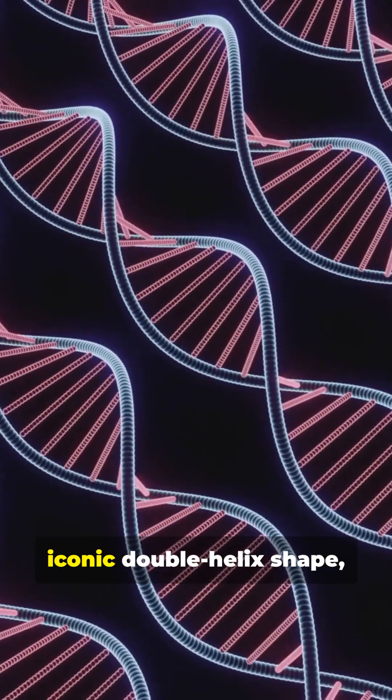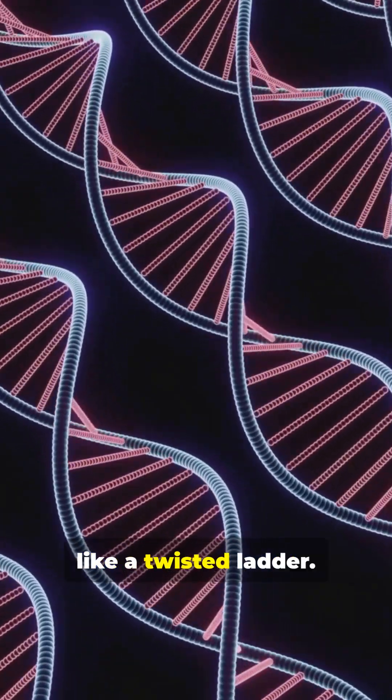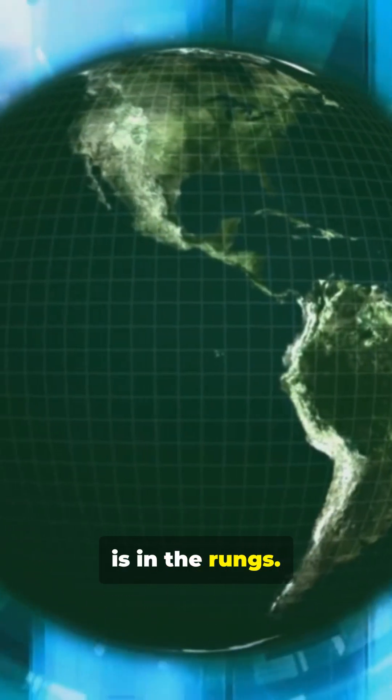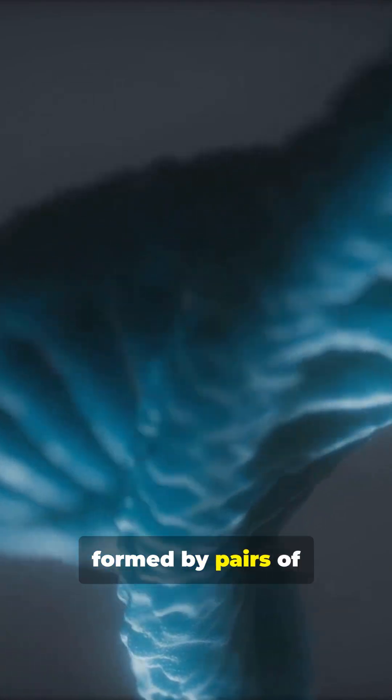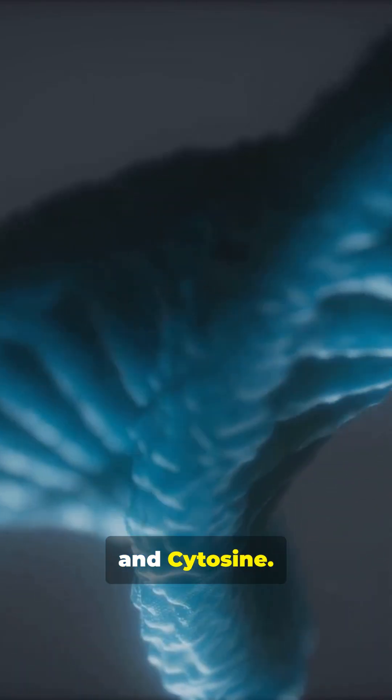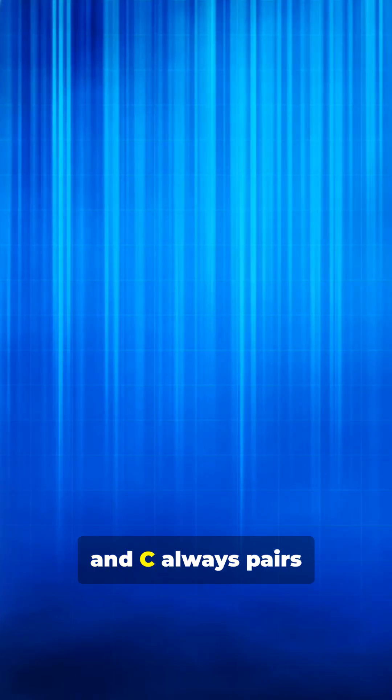They discovered its iconic double helix shape, like a twisted ladder. The sides of this ladder are made of sugar and phosphate, but the real magic is in the rungs. These rungs are formed by pairs of four chemical bases: adenine, thymine, guanine, and cytosine. A always pairs with T, and C always pairs with G. This simple four-letter alphabet writes the entire book of life.